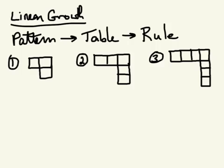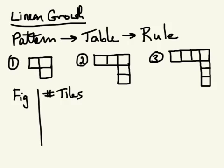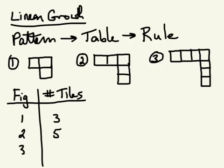If I want to make a table out of that, I would have the figure number and then the number of tiles. So in figure number one we have three tiles, in figure number two we've got five tiles, and in figure number three we have seven tiles.